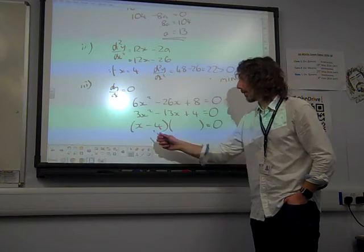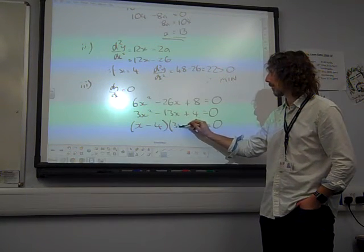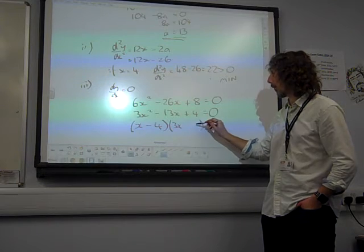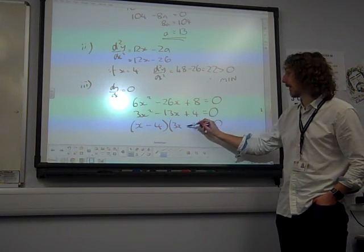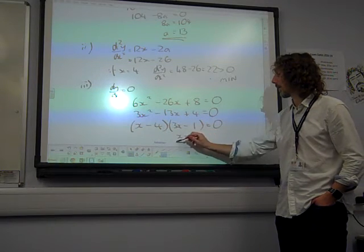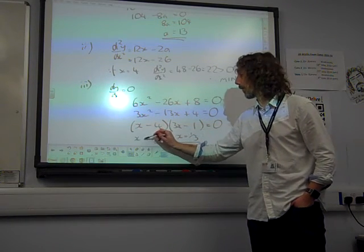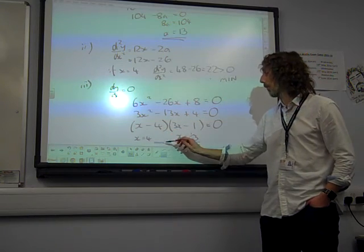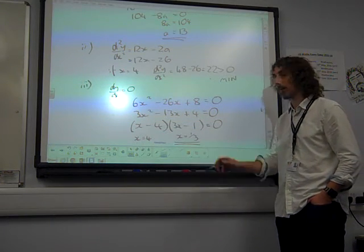So one of the brackets has to be x minus 4. We just need to find the other one. We must have a 3 at the start. We must have a 1 at the end. It must be a minus. So there's the other answer, x equals a third. It's the other root, x equals 4. We don't need to know. We only knew that one, x equals a third.